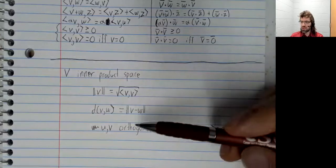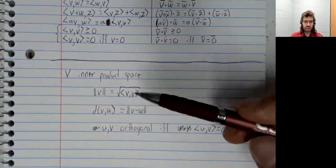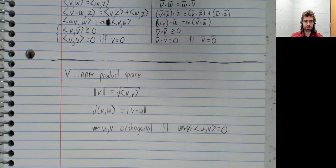Notice that all of these definitions depend on the inner product. One vector space can have different inner products defined on it. So for example, two vectors might be orthogonal in terms of one inner product, but not orthogonal in terms of another.